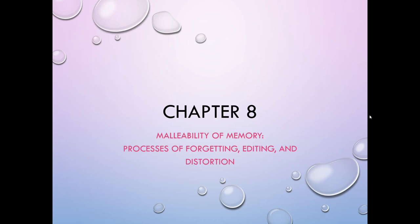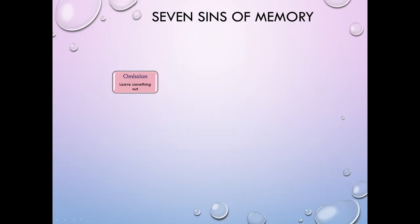Hello and welcome back to Chapter 8. In this chapter, we're going to talk about the malleability of memory, the processes of forgetting things, editing information, and distorting information in our memories. Well, let's get started. This is going to be quite the film festival chapter, so brace yourself for lots of videos embedded into the playlist.